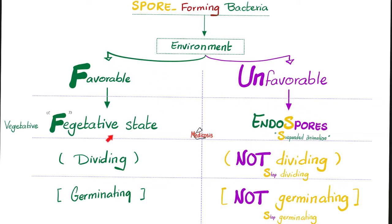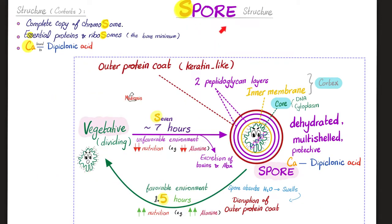When conditions go back to favorable, the bacteria will leave the spore and become vegetative once more. The contents of the spore include a complete copy of the bacterial chromosome, essential proteins and ribosomes — the bare minimum for survival — and lots of calcium bound to dipicolinic acid. Calcium is the hero of cohesion, not just in the bacterial spore but also in your bones.